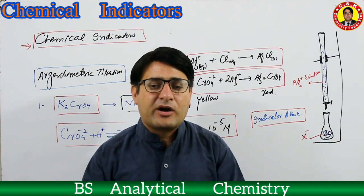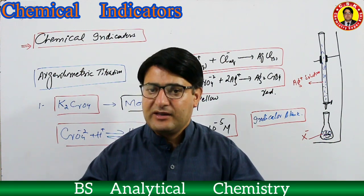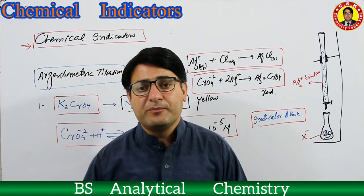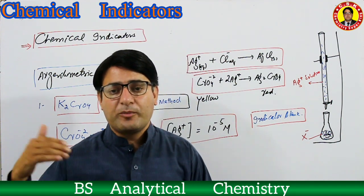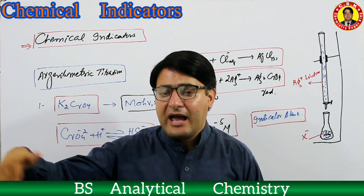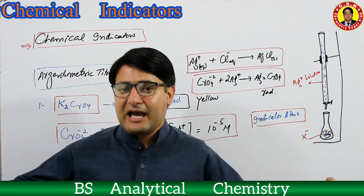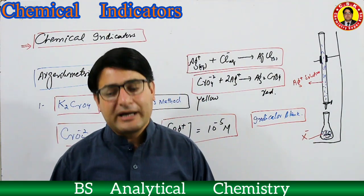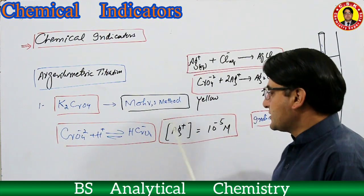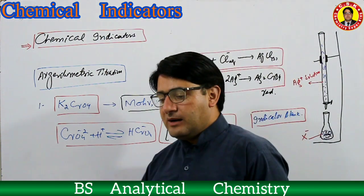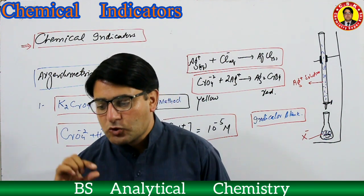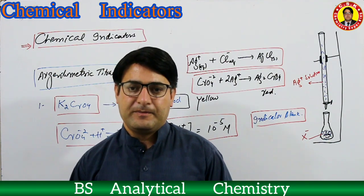This was the first technical point. Sometimes it is asked why there is a large gap between end point and equivalence point in the Mohr method. The answer is that silver chromate PPT requires a silver ion concentration of 10 to the power minus 5 molar, because the Ksp of silver chromate is not too small. That is why we run an indicator blank — to correct this large gap that causes a calculation error.